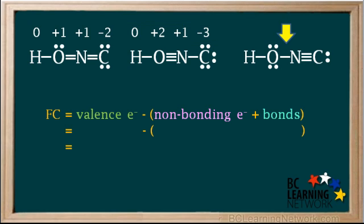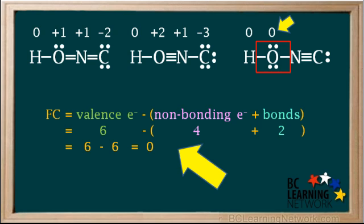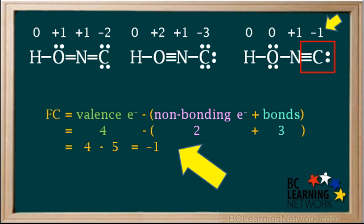Now we'll calculate the formal charges on each atom in structure three. Again, hydrogen has one valence electron, no non-bonding electrons, and one bond, so its formal charge is one minus one, or zero. The oxygen atom here has six valence electrons, four non-bonding electrons, and two bonds. So its formal charge is six minus six, which is equal to zero. The nitrogen atom here has five valence electrons, no non-bonding electrons, and four bonds. So its formal charge is five minus four, which equals positive one. The carbon atom here has four valence electrons, two non-bonding electrons, and three bonds. So its formal charge is four minus five, which equals negative one.